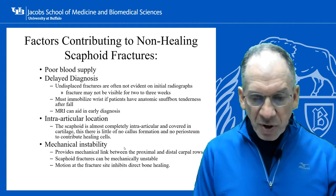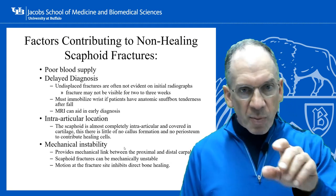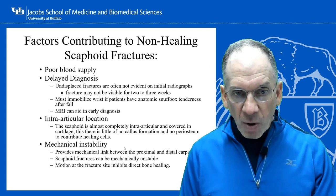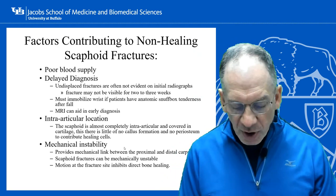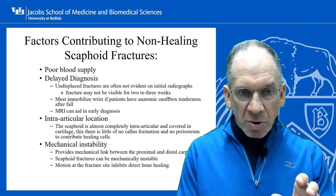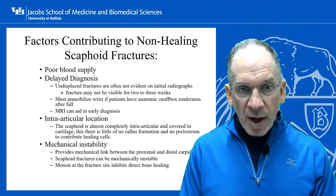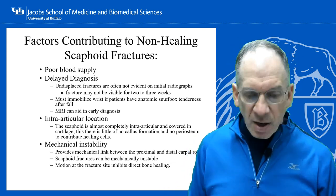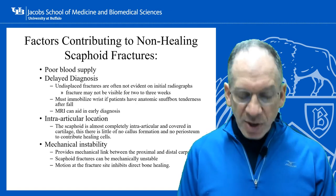Fourth, mechanical instability. The scaphoid bridges the proximal and distal carpal rows. Once disrupted, the proximal scaphoid moves with the proximal row while the distal scaphoid remains relatively fixed — too much motion increases the incidence of non-union. A small amount of micromotion at a fracture site can be beneficial for long bone healing by contributing to callus, but excessive motion at the scaphoid fracture site is detrimental.